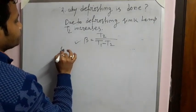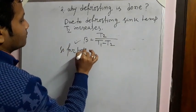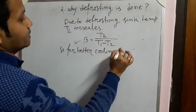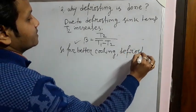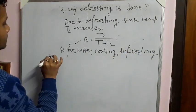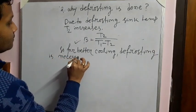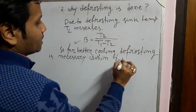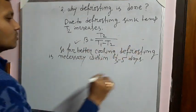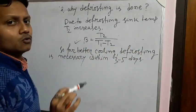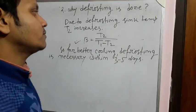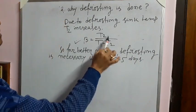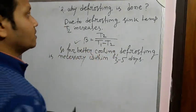For better cooling, defrosting is necessary because it increases the efficiency of the refrigerator. Defrosting is necessary within three to four days. Defrosting means an increase of the sink temperature T2, which means the efficiency of the refrigerator increases.